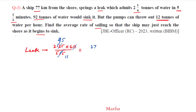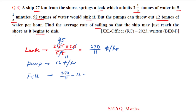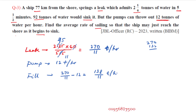The intake rate is 270/11 tons per hour. The pumps remove 12 tons per hour, which equals 132/11 tons per hour. So the net filling rate is 270/11 minus 132/11 equals 138/11 tons per hour.